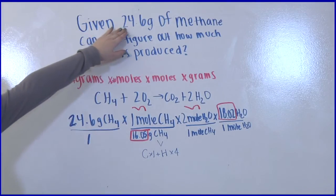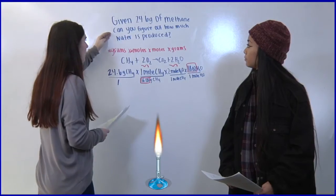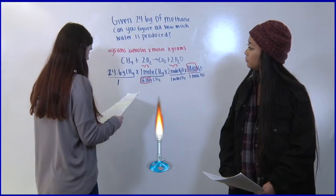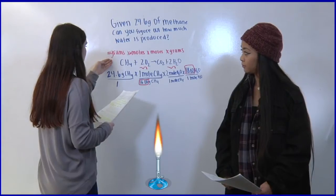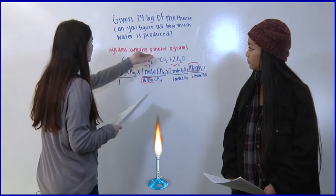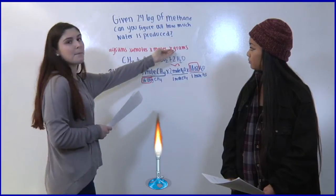Given 24.6 grams of methane can you figure out how much water is produced. The secret is going to look like this. We're first going to go to the number of grams then to the number of moles then to a mole conversion and then back to grams.